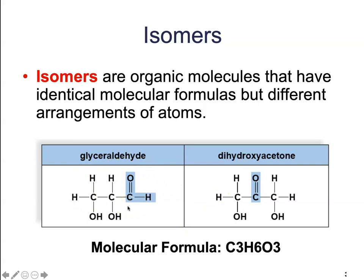These isomers are shaped differently and have completely different functions and reactivities, because the arrangement of those atoms is different. An isomer is simply an organic molecule that has an identical molecular formula but a different arrangement, and thus a different functionality. By changing not only the functional groups attached to a molecule, but also the arrangement of those atoms, we can drastically change the reactivity of a particular molecule.